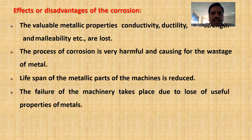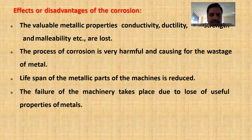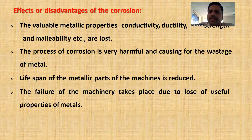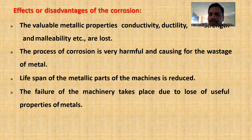Effects and disadvantages of corrosion: the valuable metallic properties — conductivity, ductility, and malleability — are lost. The process of corrosion is very harmful and causes wastage of metal. When the metal undergoes corrosion, that metal cannot be used to make any articles, and if made into an engine, it loses its efficiency. The lifespan of metallic parts of machines is reduced, and the failure of machinery takes place due to the loss of useful properties of the metal.